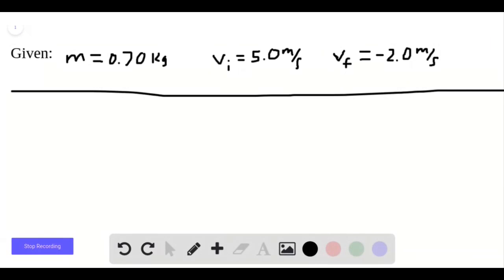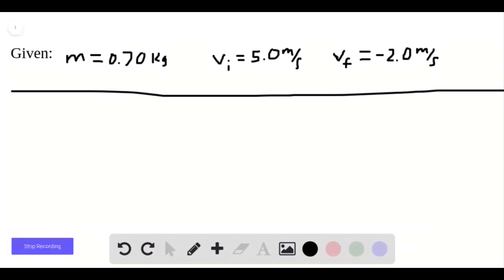Our question says that we have a 0.70 kilogram ball, which I label as M here for that mass of the ball, and it's moving horizontally at initial velocity V sub I of 5 meters per second.